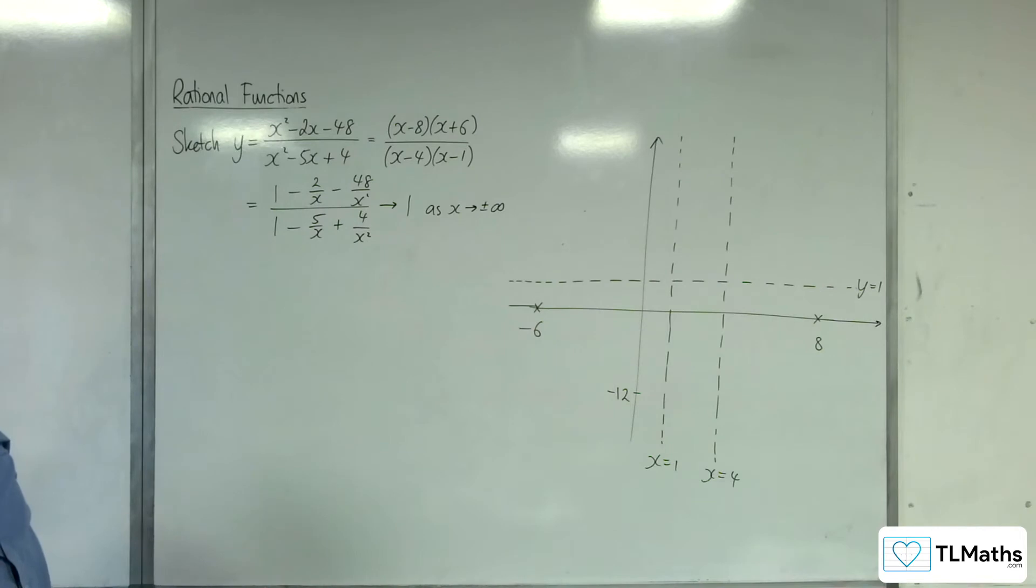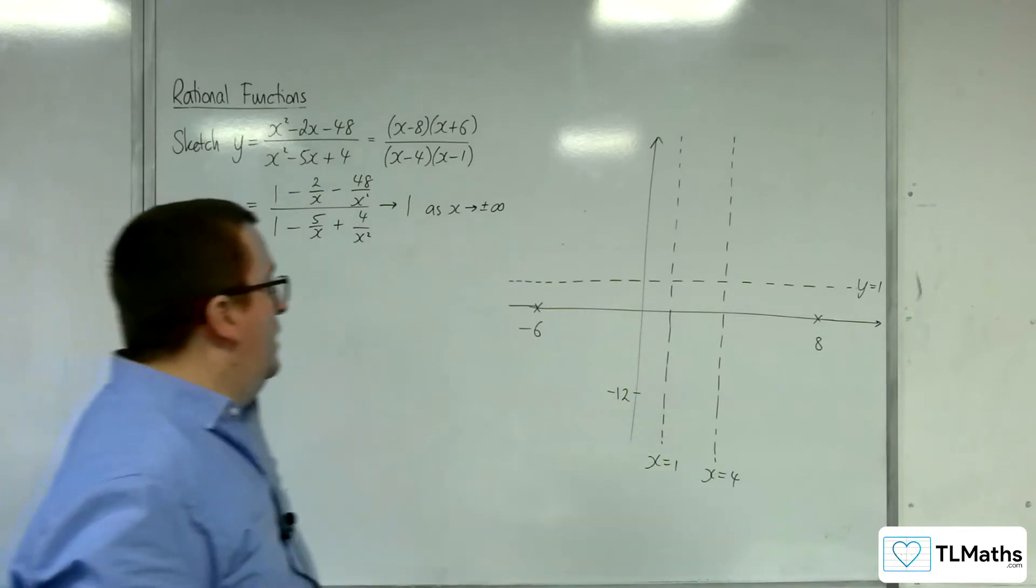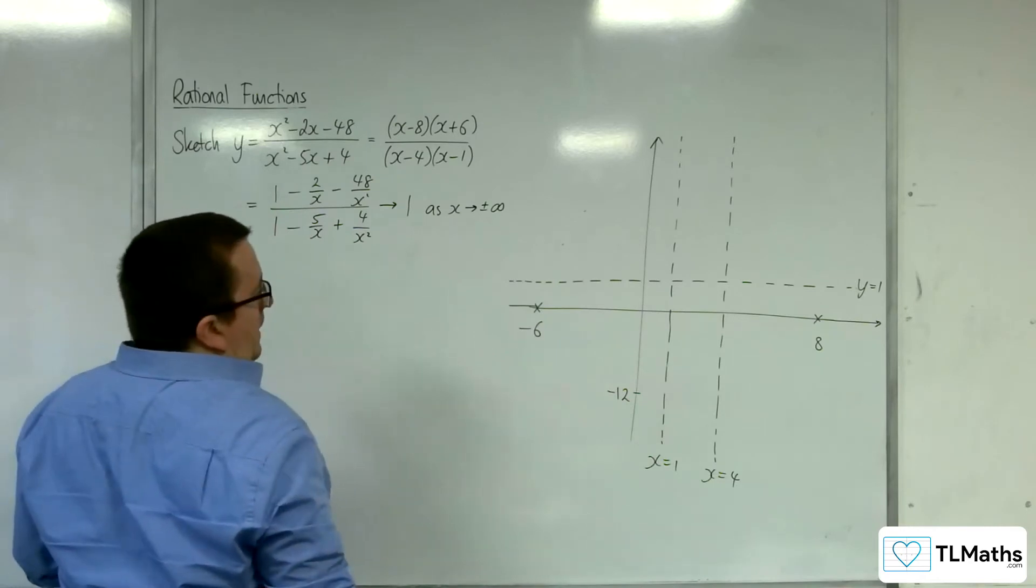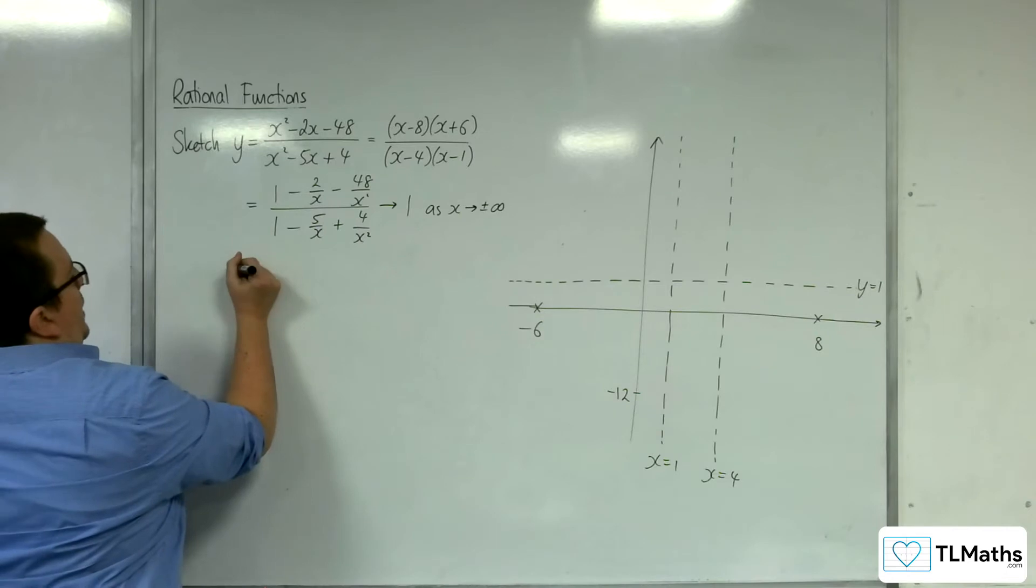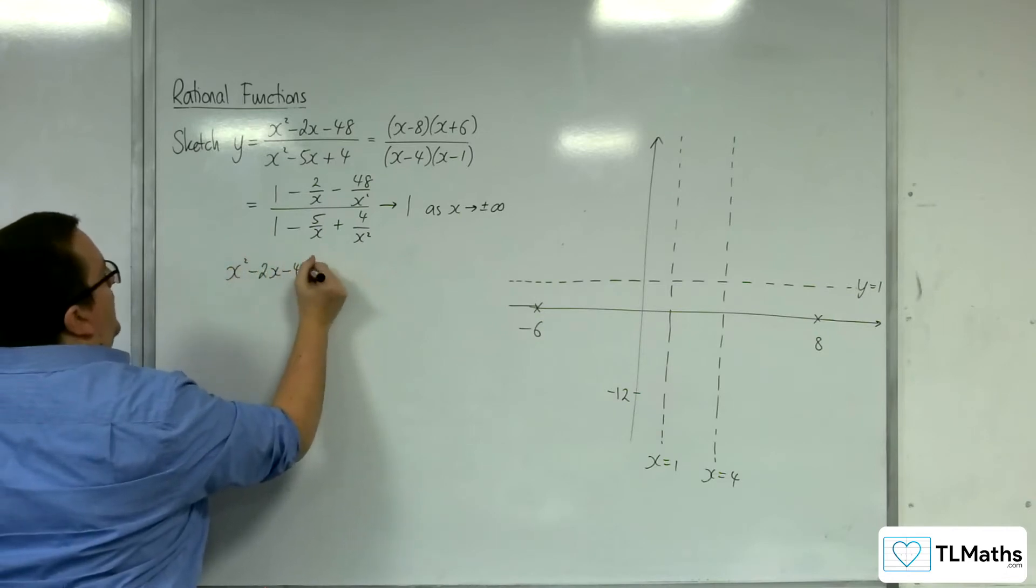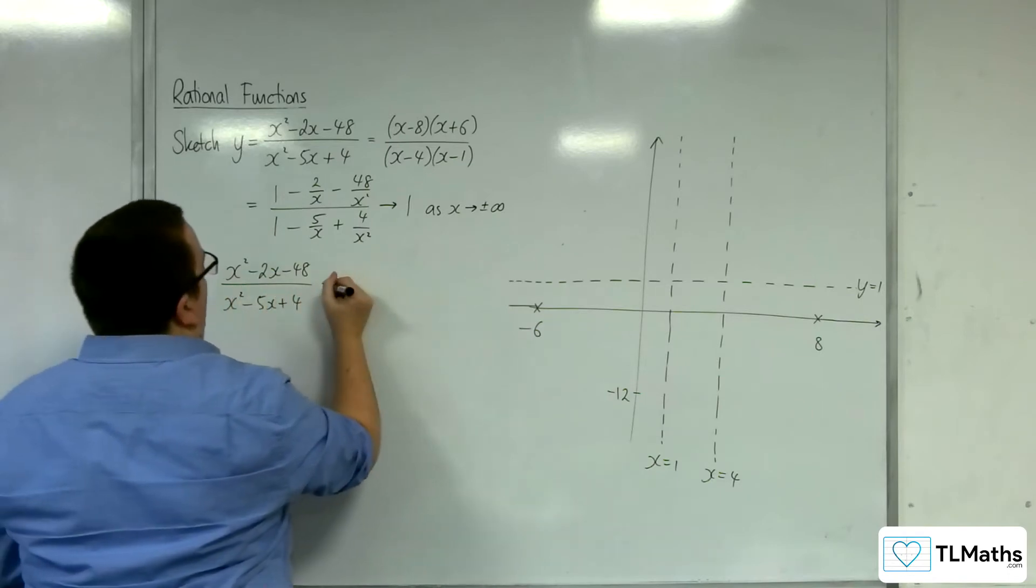We also need to determine whether it's crossing the horizontal asymptote again at any other point. Well actually, we don't know if it's crossing the horizontal asymptote at all at this rate. So let's see what we've got. So x squared take away 2x take away 48 over x squared take away 5x plus 4 equals 1.